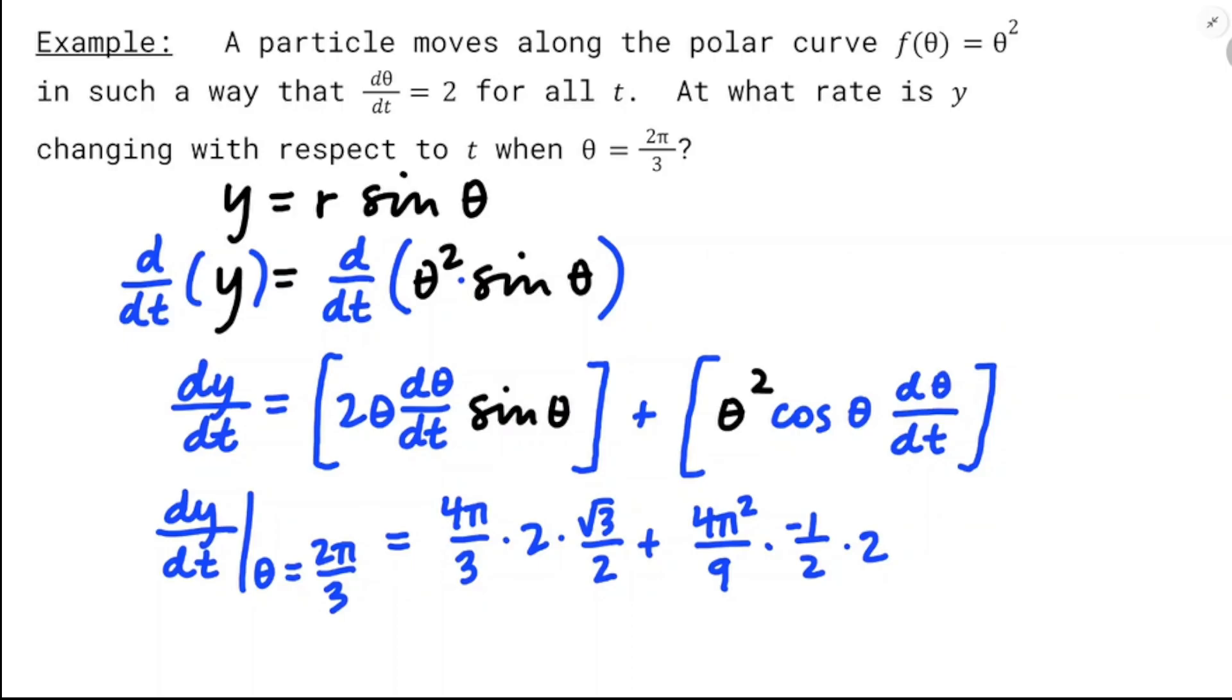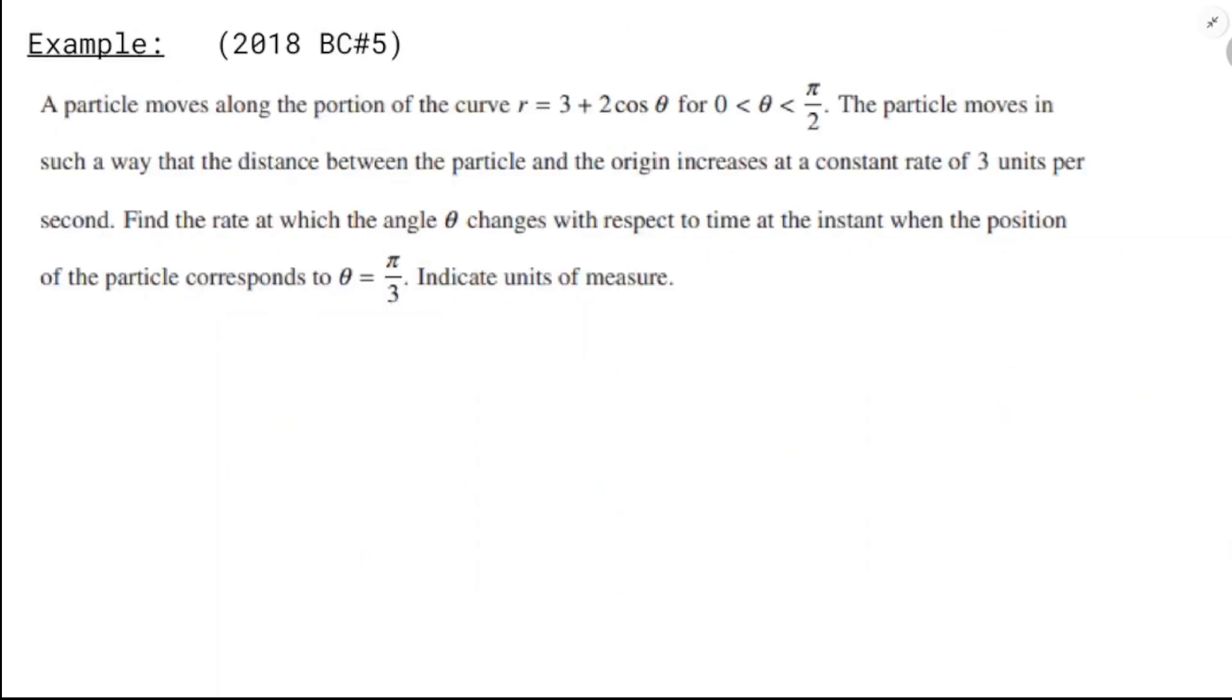And I'll add that to θ², 4π²/9, and cosine of 2π/3, that's going to be negative 1/2, and dθ/dt equals 2, and that's the type of number that if we wanted to simplify it, we certainly could, but if we didn't want to, we probably wouldn't need to in AP calculus. You can definitely know on the free response.